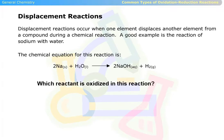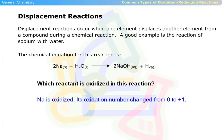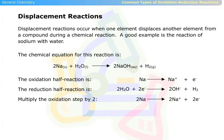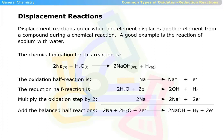Which reactant is oxidized in this reaction? Sodium is oxidized — its oxidation number changed from 0 to plus 1. This is the oxidation half reaction. This is the reduction half reaction. We multiply the oxidation step by 2, and add the balanced half reactions, and cancel the electrons.